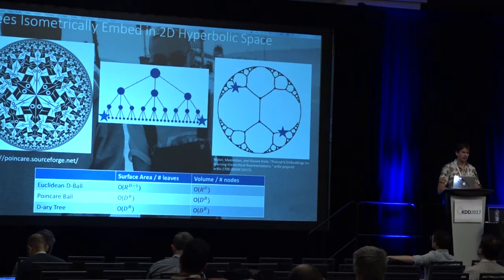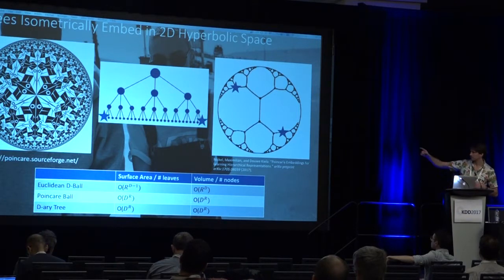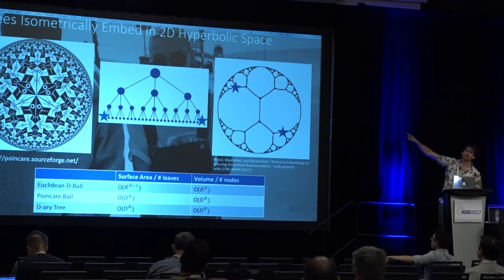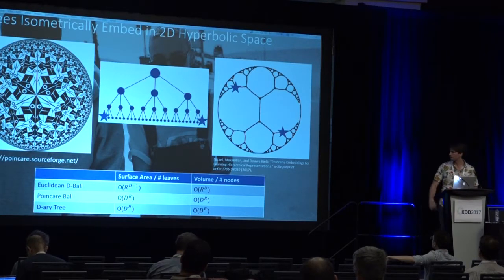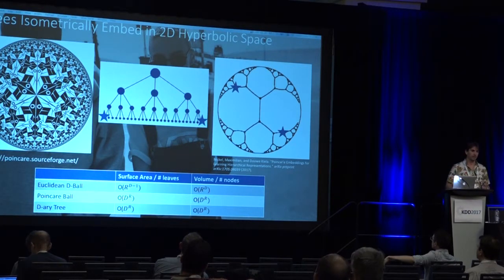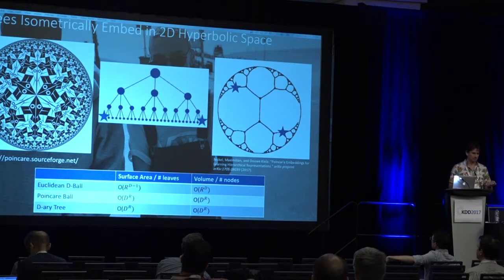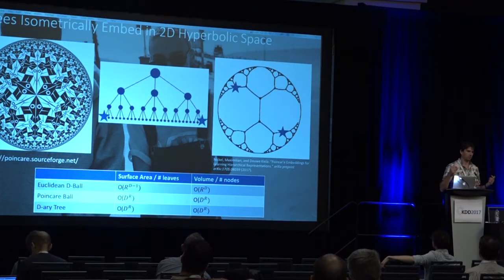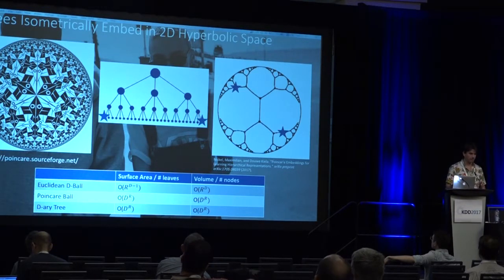Trees embed isometrically in hyperbolic space — isometrically just means the distances map exactly. In a tree graph that splits in three, two leaves are six apart because you have to go back to the root to reach each other, and that's the same in hyperbolic space because you go through the middle. When you think about the number of leaves in a tree, that grows hyperbolically with the depth by the branching factor. Space in hyperbolic space grows exponentially — the circumference of a circle grows exponentially, not polynomially. So it's well equipped to model these structures. Embedding a star graph isometrically in two-dimensional Euclidean space is impossible, but there's a completely isometric embedding in hyperbolic space.